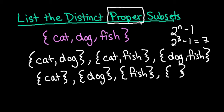So just to recap, remember that to figure out how many sets you should have listed for the distinct proper subsets, you can just take 2 to the n minus 1. And as we count through, we have 1, 2, 3, 4, 5, 6, and 7 subsets listed from cat, dog, and fish. So we know that we have all the answers written down.